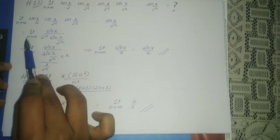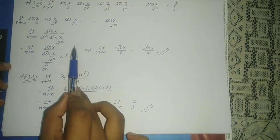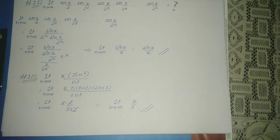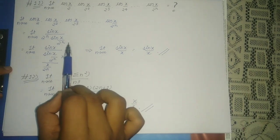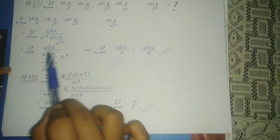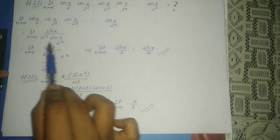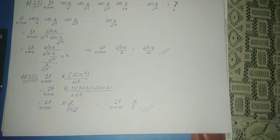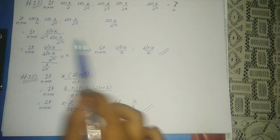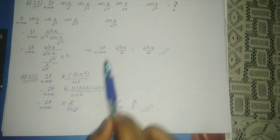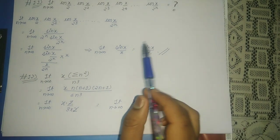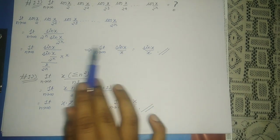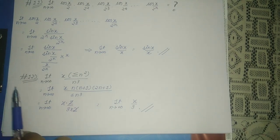This can be written as limit n tending to infinity of sin(x) / (2ⁿ · sin(x/2ⁿ)). The value of x/2ⁿ tends to 0 as n tends to infinity, so sin(x/2ⁿ) / (x/2ⁿ) equals 1. We already have 2ⁿ, so multiplying and dividing by x, this simplifies to limit n tending to infinity of sin(x)/x. Note that sin(x)/x is not equal to 1 here, since n is tending to infinity and x is not tending to 0.